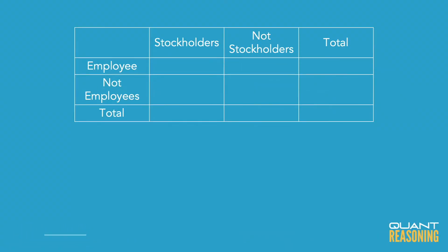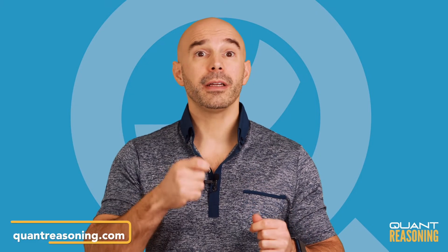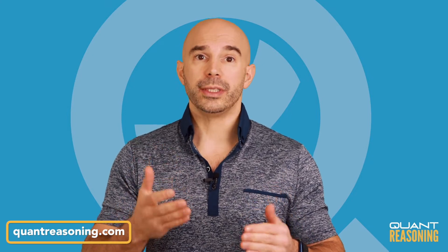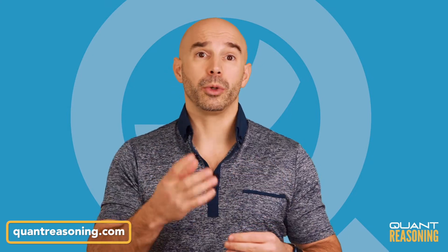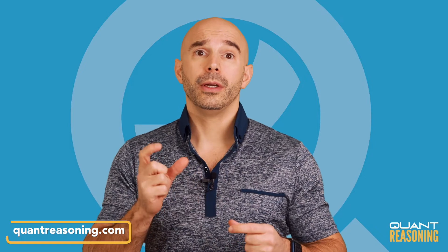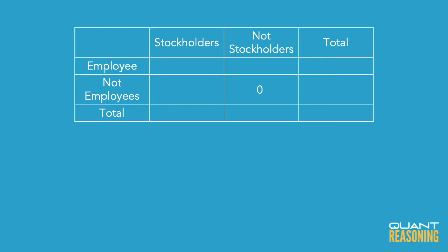Stockholders, not stockholders, total. Employees, not employees, total. Now, they gave us an important hint in the question stem when they said that every person who attended a certain meeting was either a stockholder or an employee or both, which means that we must put a zero into the cell that describes those people who are neither stockholders nor employees.